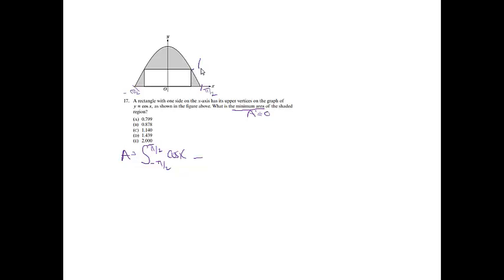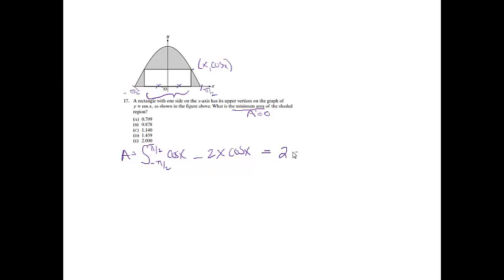I'll give this coordinates. This is going to go over x units and up cosine x since it's hitting the cosine x curve. So if we think of the length, this is x and this is x, so the length is 2x. Times the height, which is the y value, cosine x — that's the formula for the area of the rectangle. If we simplify using our calculator with math 9, we get 2 minus 2x cosine x. That's the area.